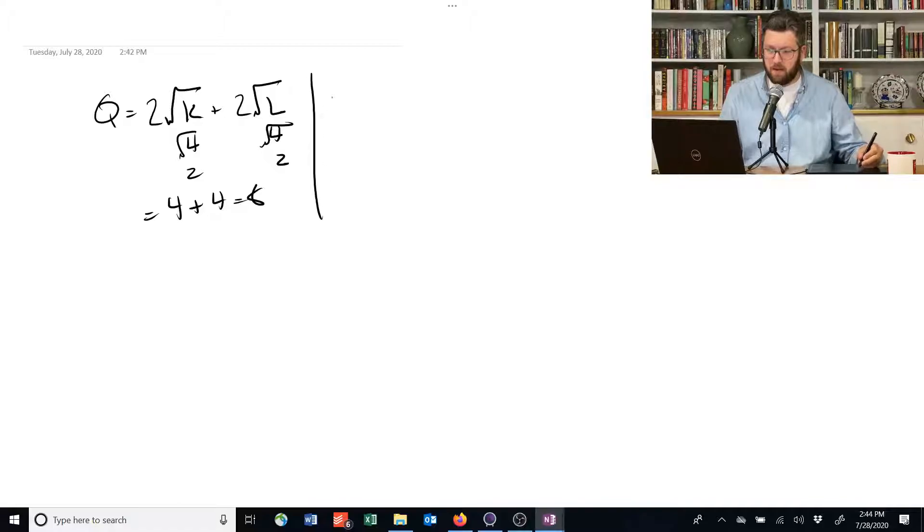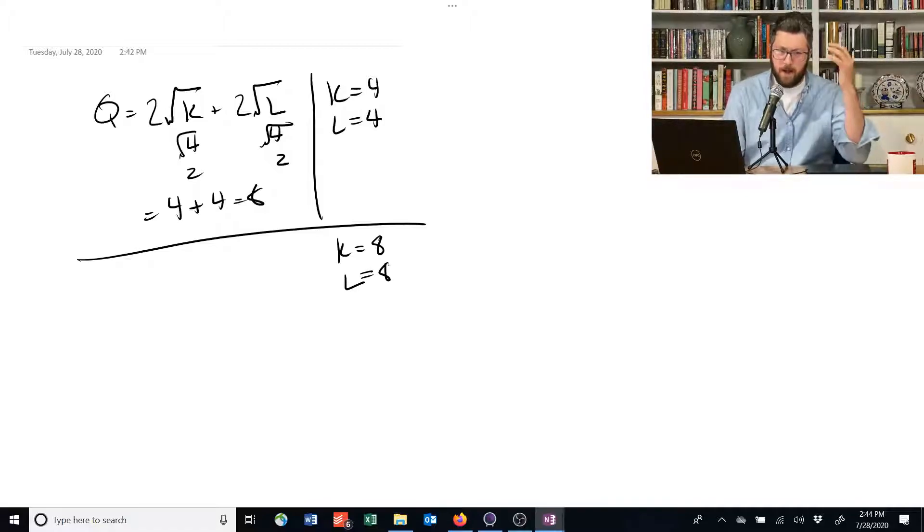What if you double that? So this was for K equals 4 and L equals 4. What if we go to 8 and 8? So we have twice as much capital and twice as much labor now.